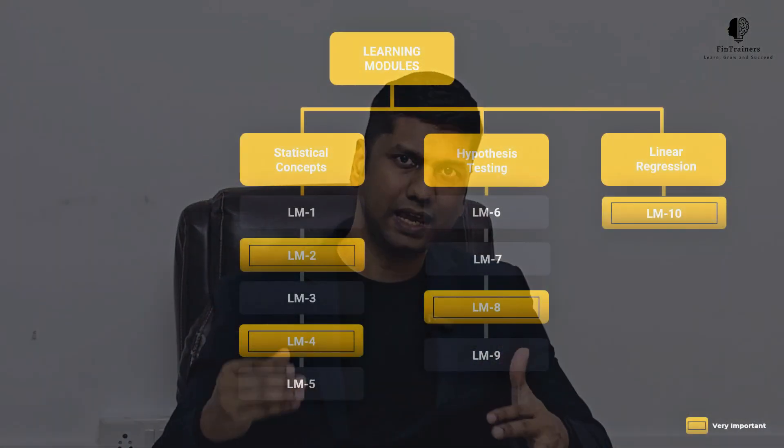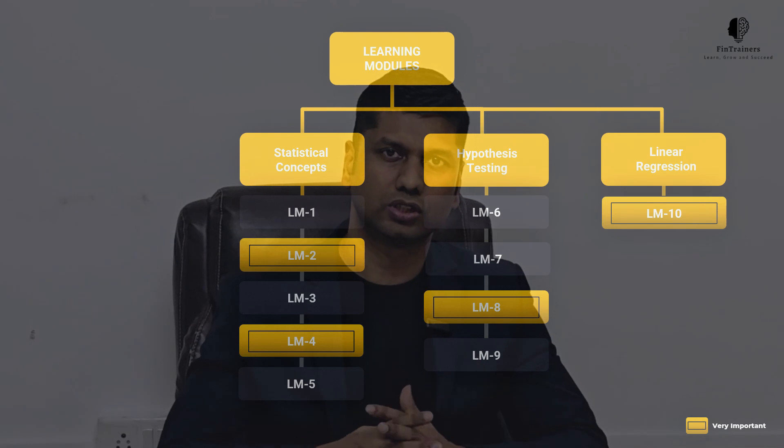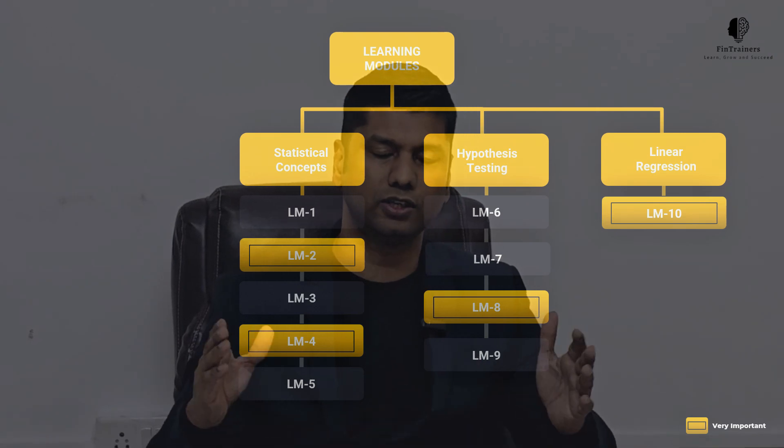And learning module 10, which is linear regression — introduction primarily at level one; they develop on this in level two — is very important for forecasting techniques. If you're going to be a quant-based analyst, linear regression is really important. So focus on learning module 10 and spend enough time to understand this.